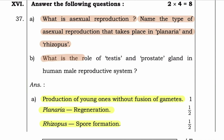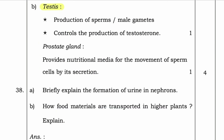What is the role of testis and prostate gland in the human male reproductive system? Testis: production of sperms or male gametes and control of production of testosterone. As for the prostate gland, it provides a nutritional medium for the movement of sperm cells by its secretion.